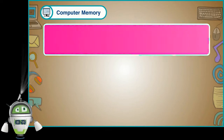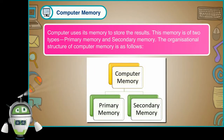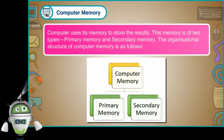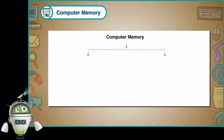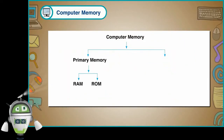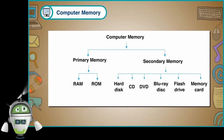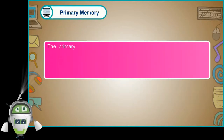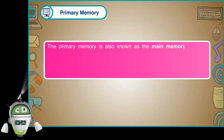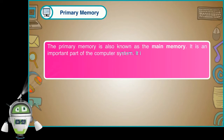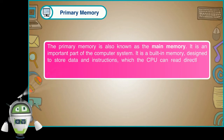Computer memory: a computer uses its memory to store the results. This memory is of two types: primary memory and secondary memory. The organizational structure includes primary memory — RAM and ROM — and secondary memory — hard disk, CD, DVD, Blu-ray disk, flash drive, and memory card. Primary memory is also known as the main memory. It is an important part of the computer system — a built-in memory designed to store data and instructions which the CPU can read directly.